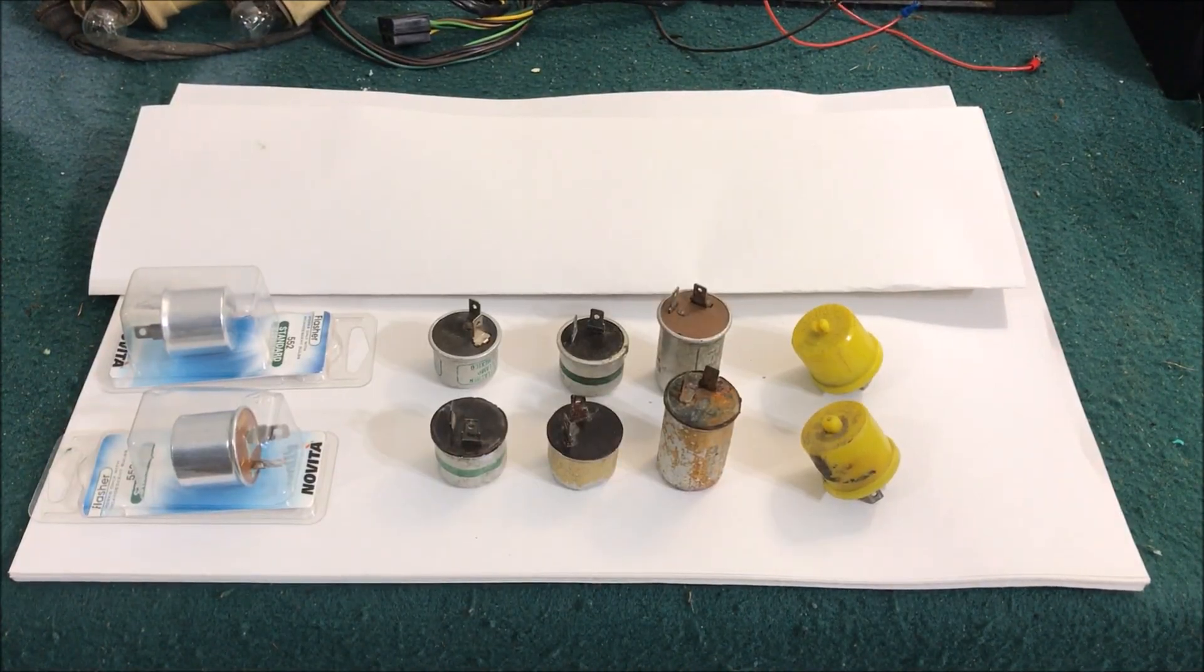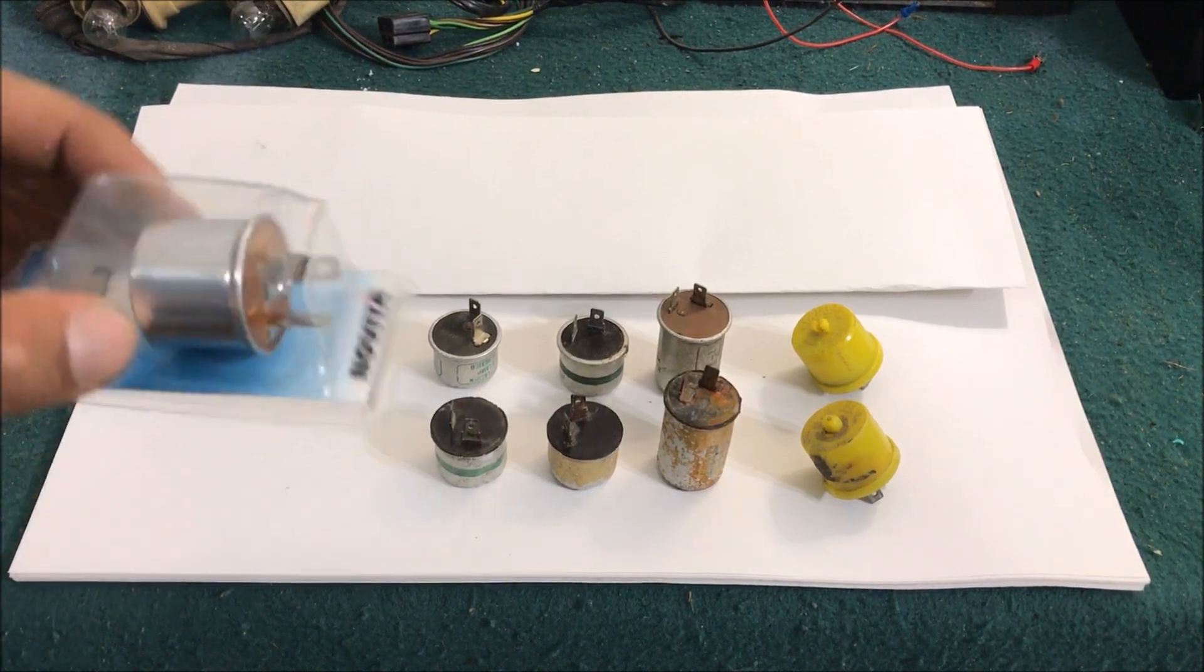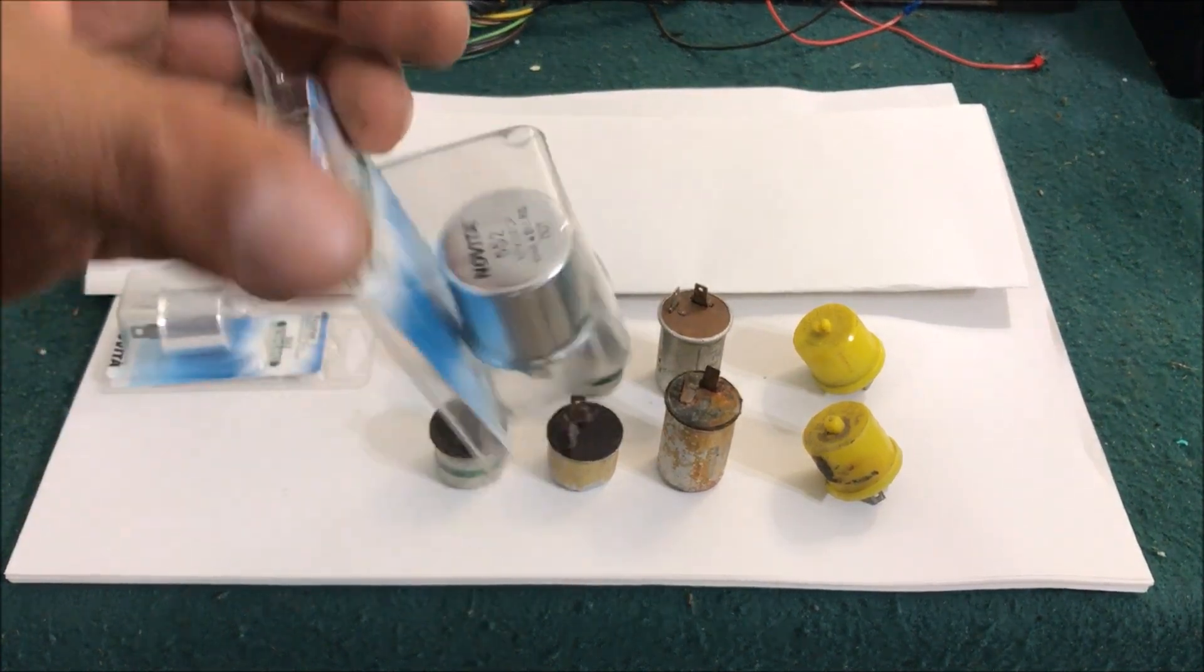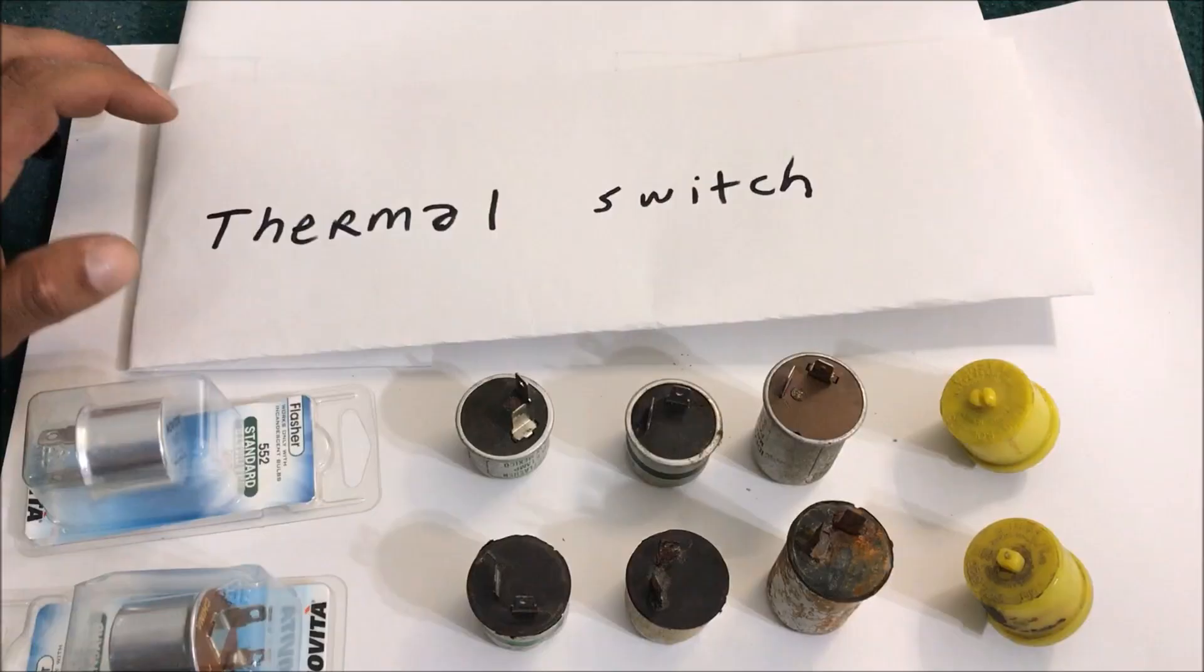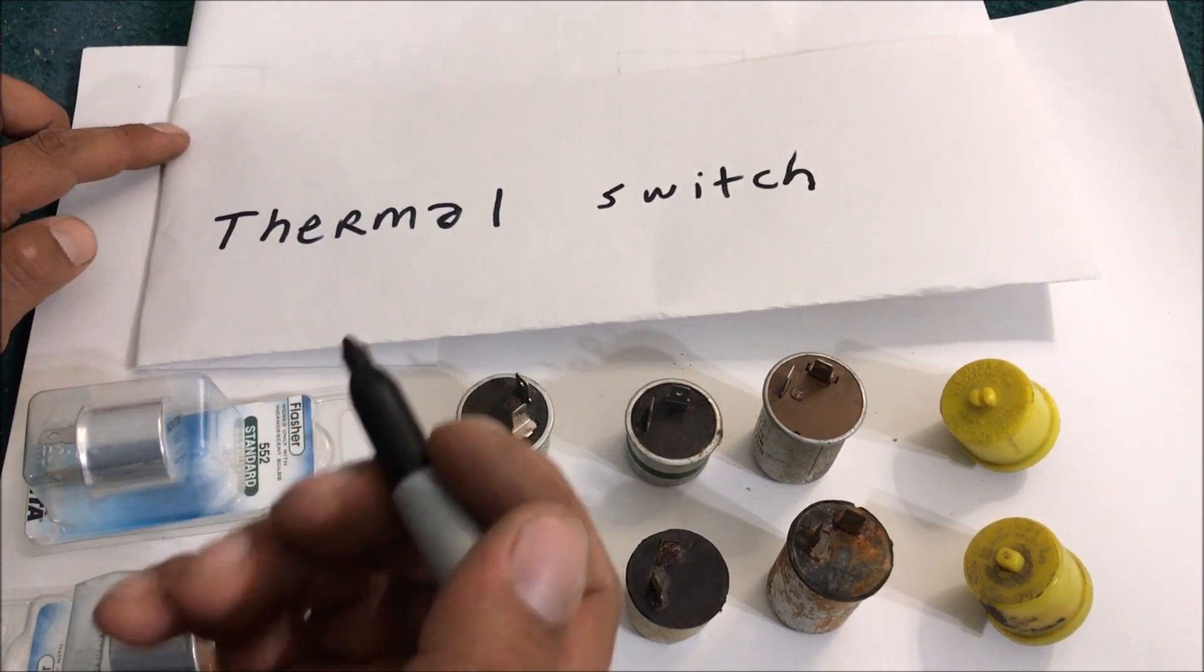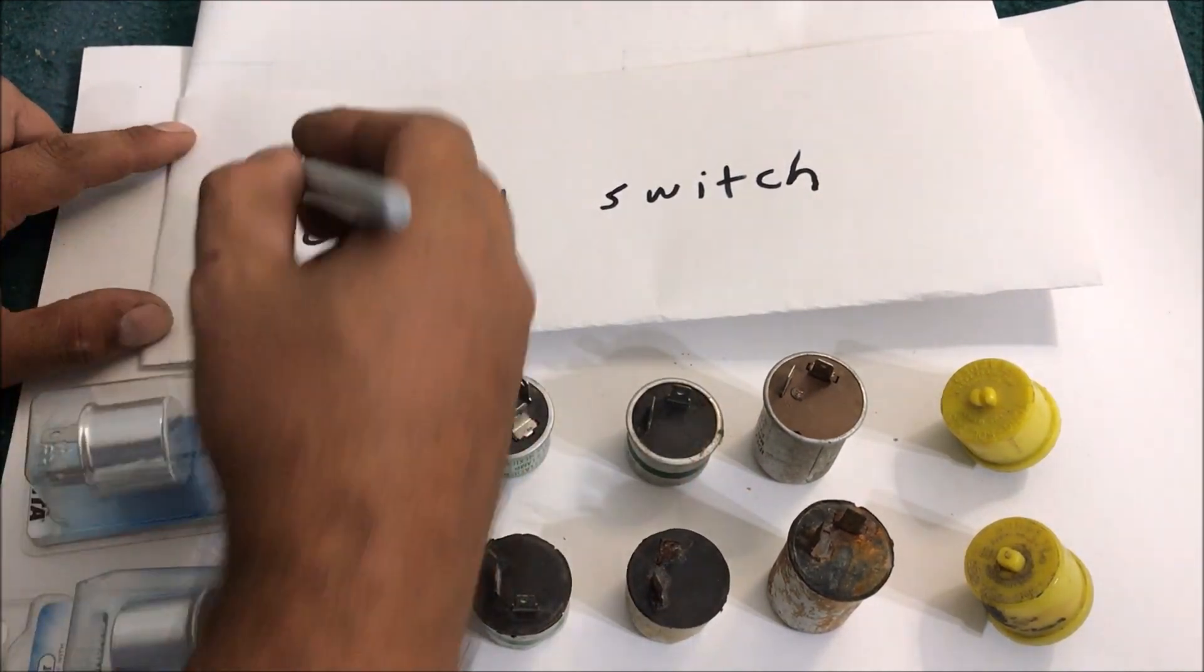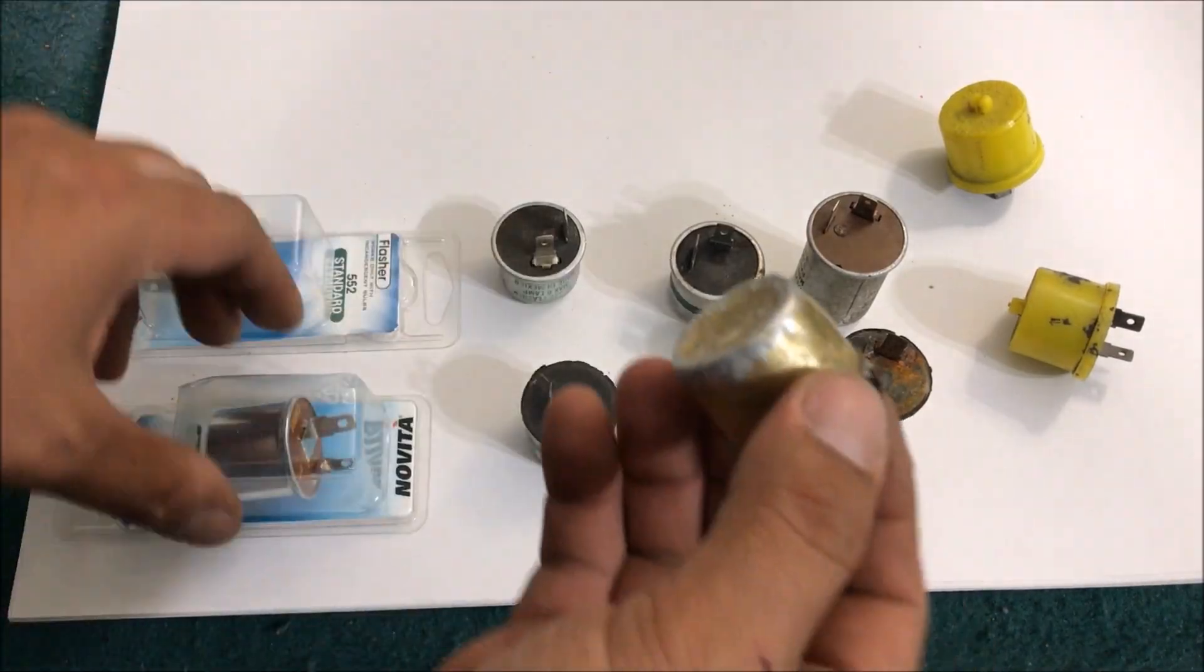The reason I'm making this video is because if you're having problems with your turn signals or your hazard lights, you really have to understand how this works so you can effectively test it or test and find the problem. So first of all, these are thermal switches that use the principles of the bi-metallic strip.